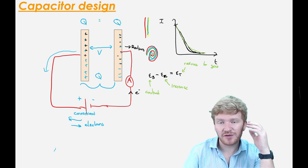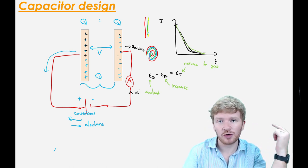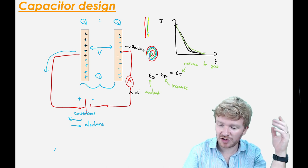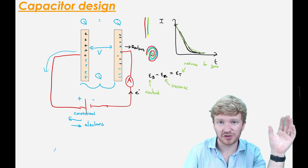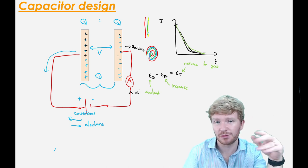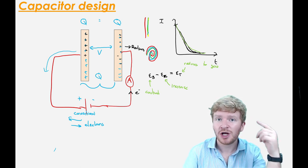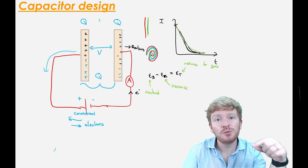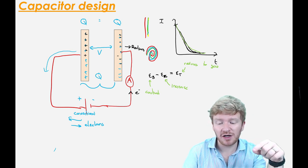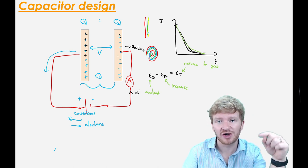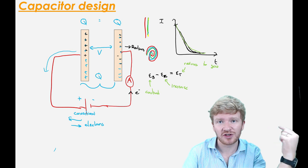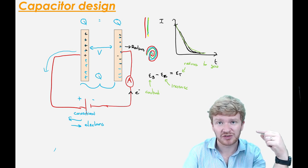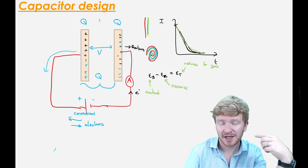The logic of these curves is not required for CIE. There is a really nice equation that most other exam boards do teach, but you don't need it for Cambridge. However, you may well be asked to measure current at different times on a discharging or charging capacitor in the practical exam.